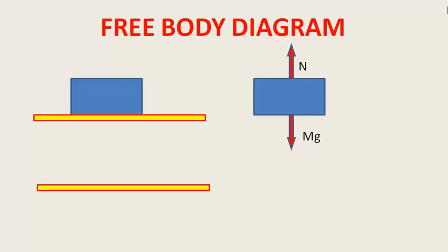अब जब normal reaction ऊपर लगी है, तो इसके corresponding नीचे वाले surface पर भी force लगती है। Action-reaction के pairs होंगे इसमें हमेशा। Normal reaction की जो force है वो इस surface पर नीचे लगती है, लेकिन ground इस surface के ऊपर upward force लगा रहा है — नहीं तो ये surface भी गिर जाएगा। तो हमेशा इस प्रकार की चीज़ों को free body diagram से समझेंगे।